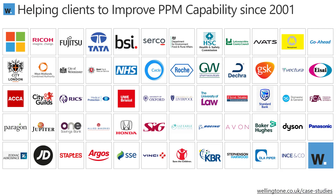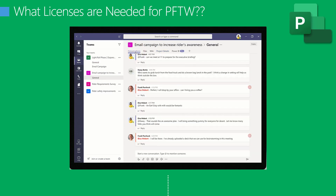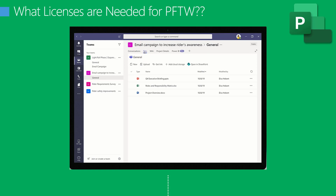Here's a small selection of our customers — quite a diverse mix of organizations, but one thing they all have in common is that they all have PMOs and they all manage projects. There's a large number of case studies available on the website, so do follow that link and take a look. Now let's get on with answering the main question: what licenses do we need for Project for the Web?